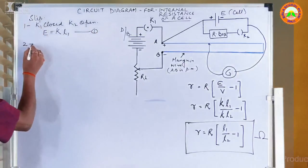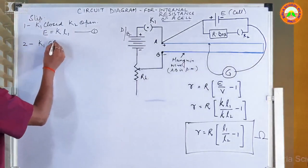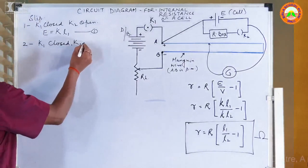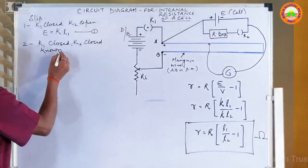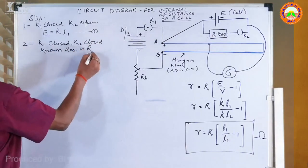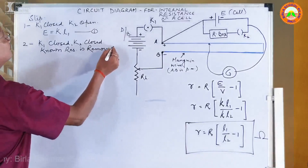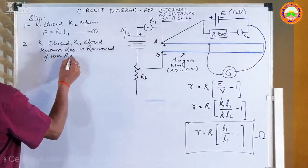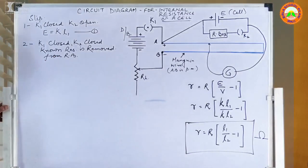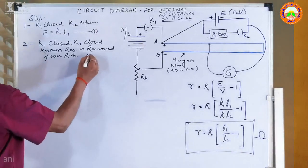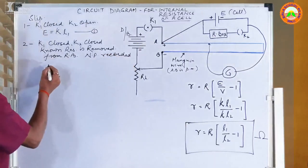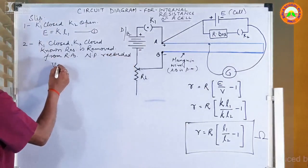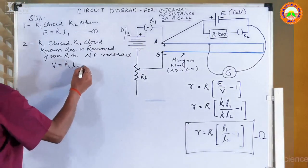In step 2, both K1 and K2 are closed. When both keys are closed, a known resistance R is removed from the resistance box. Now the null point recorded on the galvanometer no longer measures EMF but the potential difference V. A different null-point length is obtained on the potentiometer and it is written as V = KL₂.